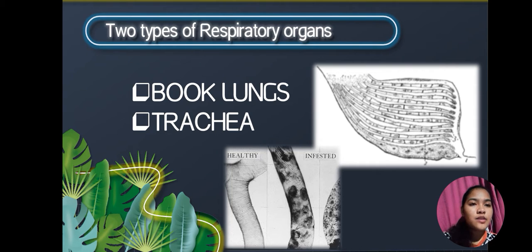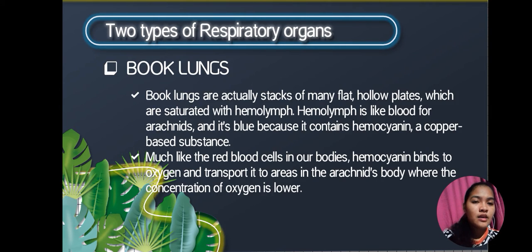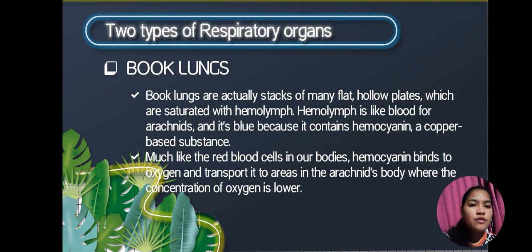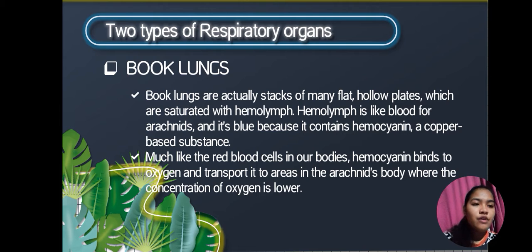There are two types of respiratory organs: book lungs and trachea. Book lungs are stacks of many flat hollow plates saturated with hemolymph. Hemolymph is like blood for arachnids and is blue because it contains hemocyanin, a copper-based substance. Much like red blood cells in our bodies, hemocyanin binds to oxygen and transports it to areas in the arachnid's body where the concentration of oxygen is lower.